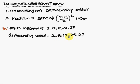next one is 12, 25, 27. This is the ascending order.